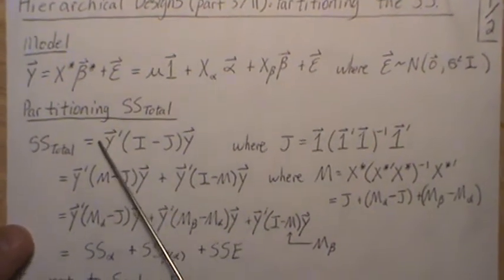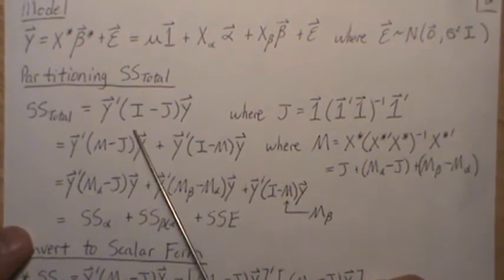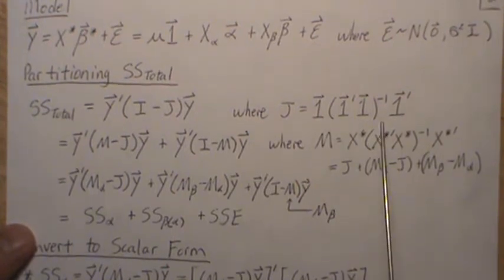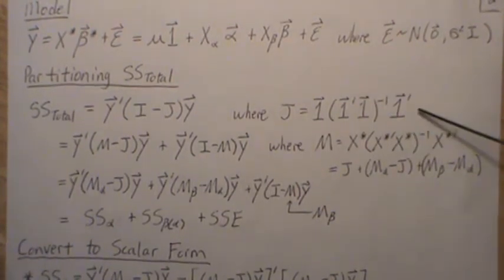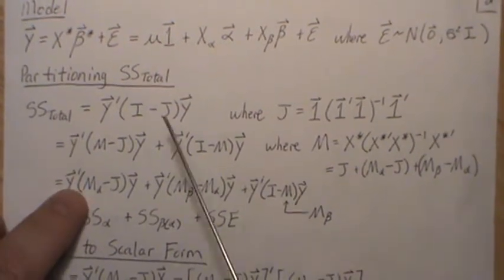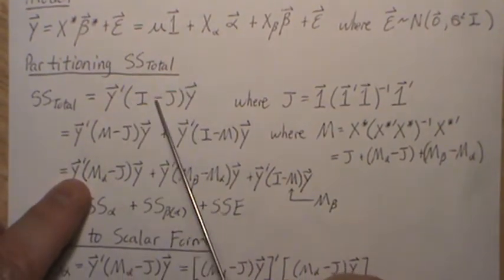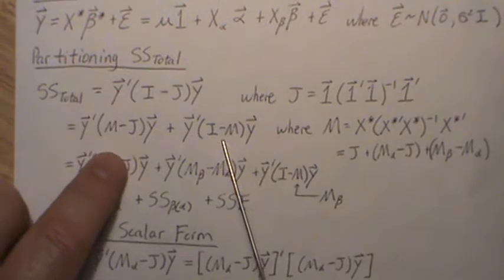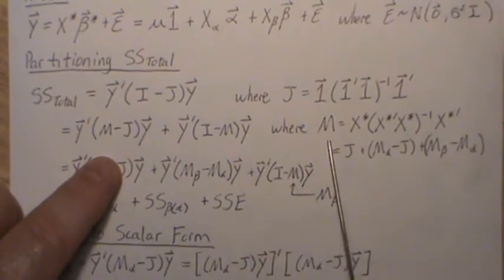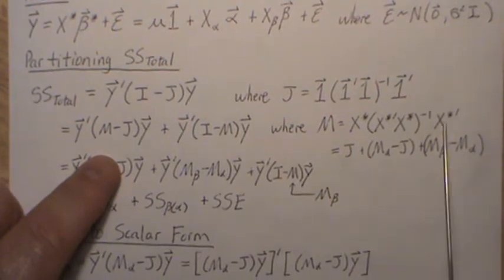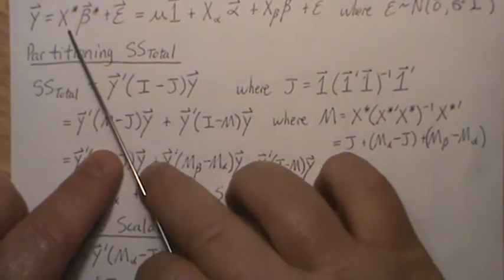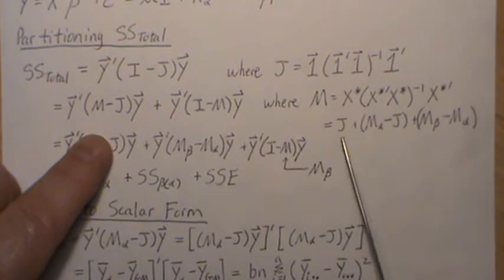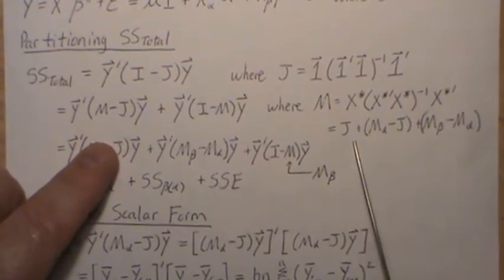Now, partitioning the total sums of squares — as a reminder, the total sum of squares is y-transpose times (I minus J) times y, where J is the perpendicular projection matrix on the column space of ones. If we add and subtract zero — specifically add M and subtract M — then multiply the y's in, we get a new expression. We define M as the perpendicular projection matrix onto the column space of x-star, the full design matrix. And in part two, we learned the structure of this perpendicular projection matrix.